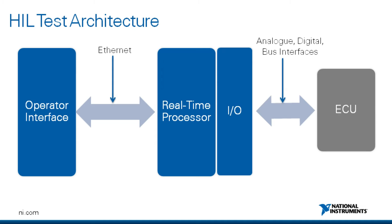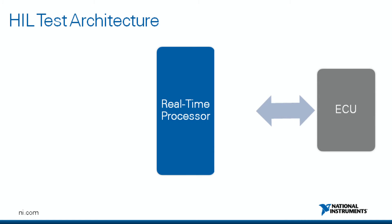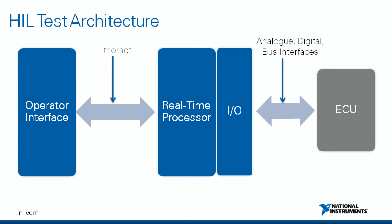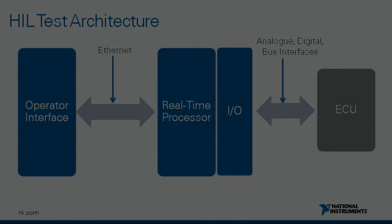An HIL test system consists of three main components: a real-time processor, IO connections, and an operator interface. The real-time processor provides the deterministic execution of the test system components, such as hardware communication and high-frequency model execution. This is necessary to provide an accurate simulation of the real-world environment. The IO connections are signals that interact with the unit under test, whether these are analogue, digital, or bus messages. The final part is the operator interface, which provides the real-time processor with commands to control the test procedure, user interface, and data logging.